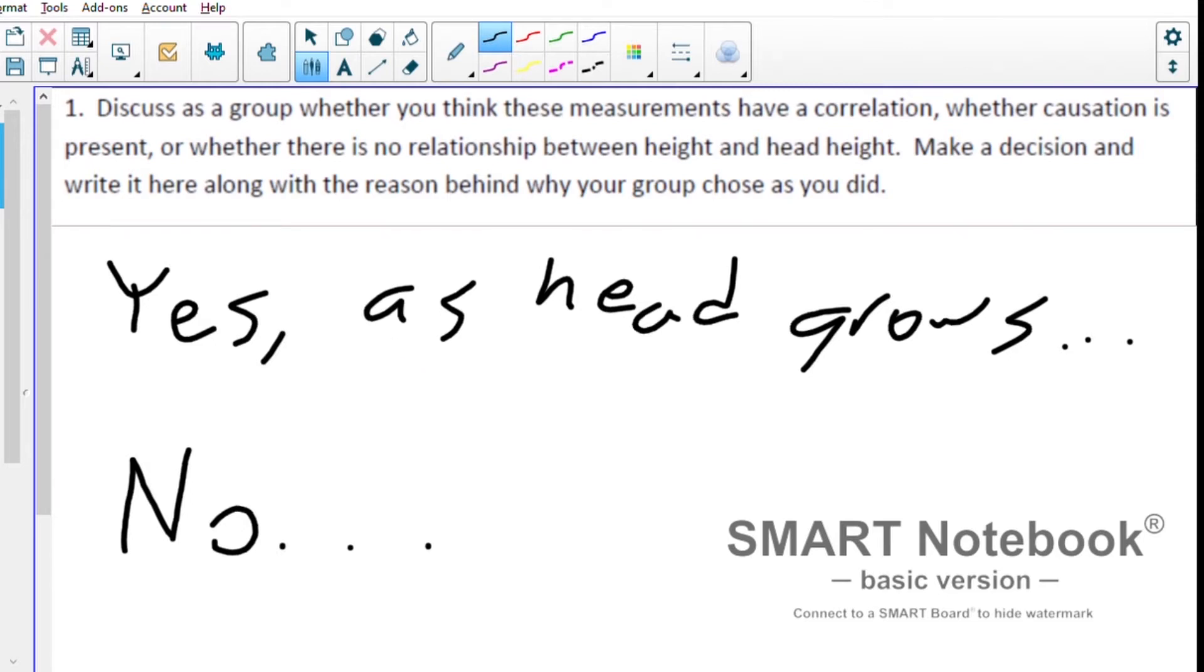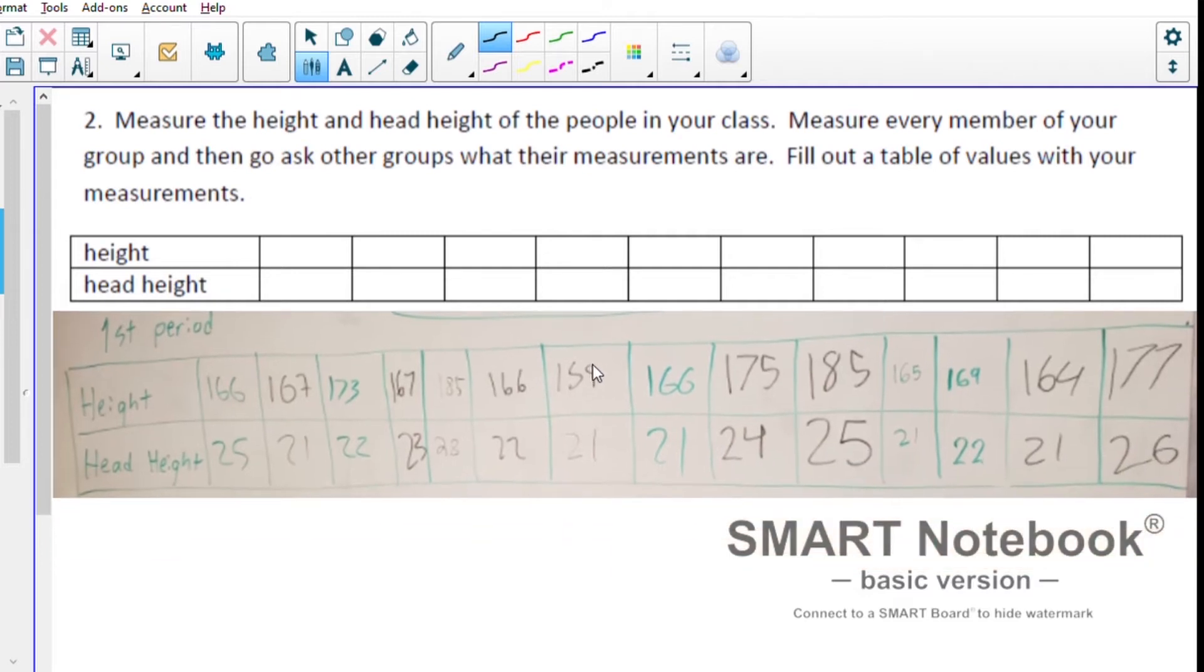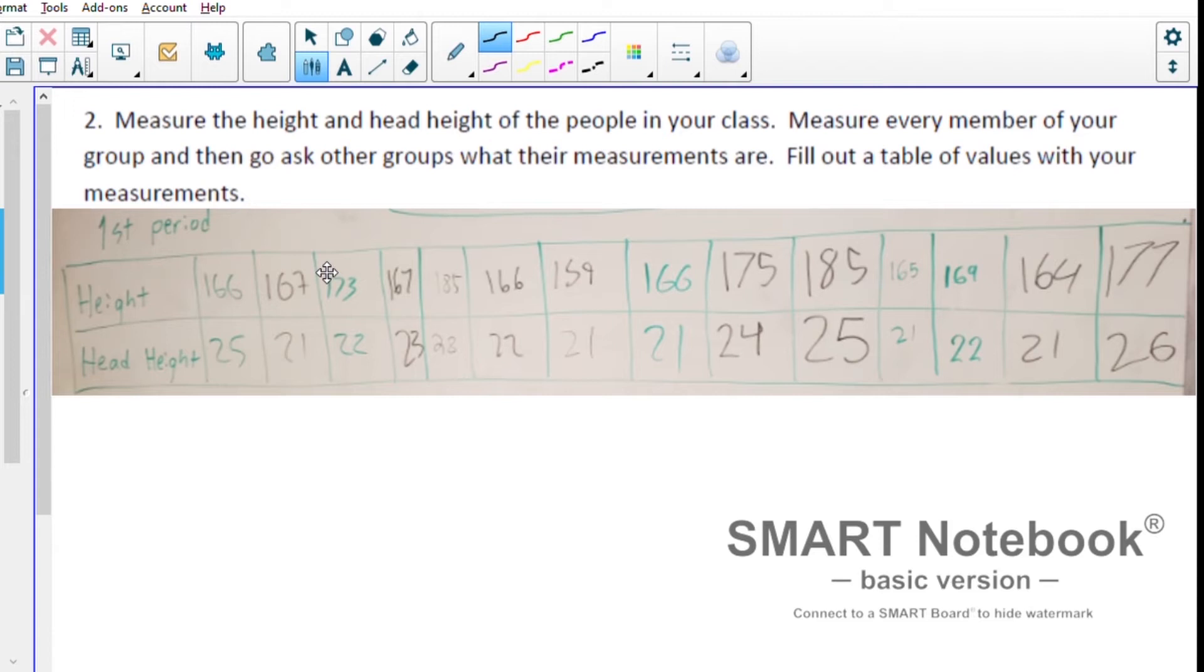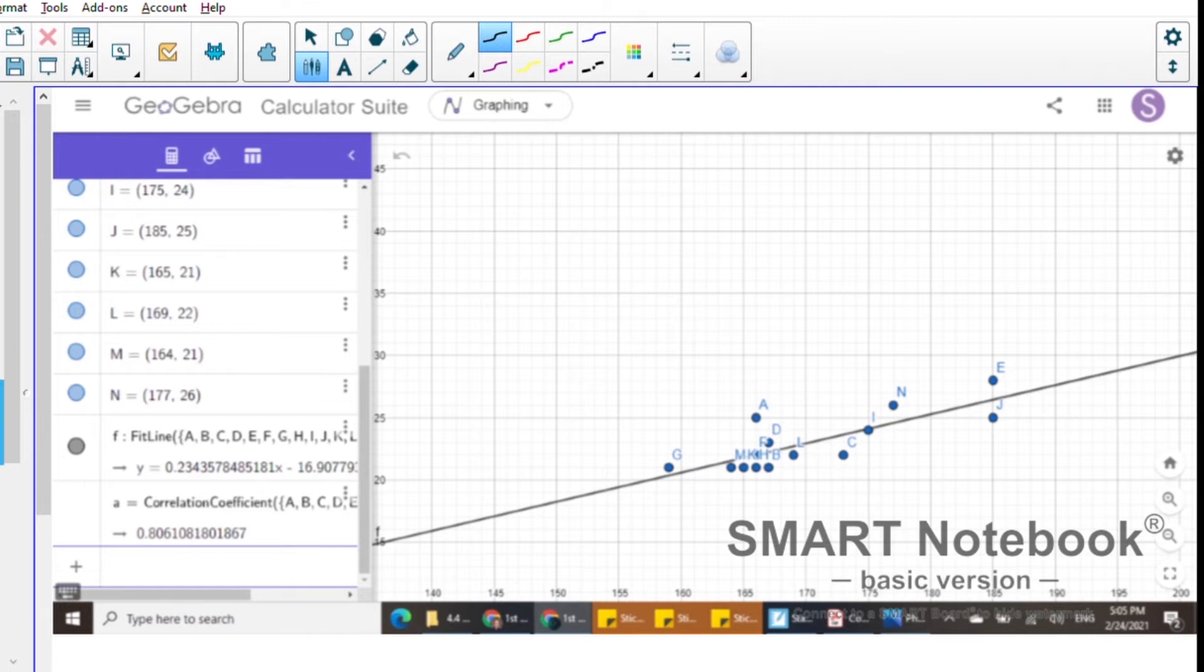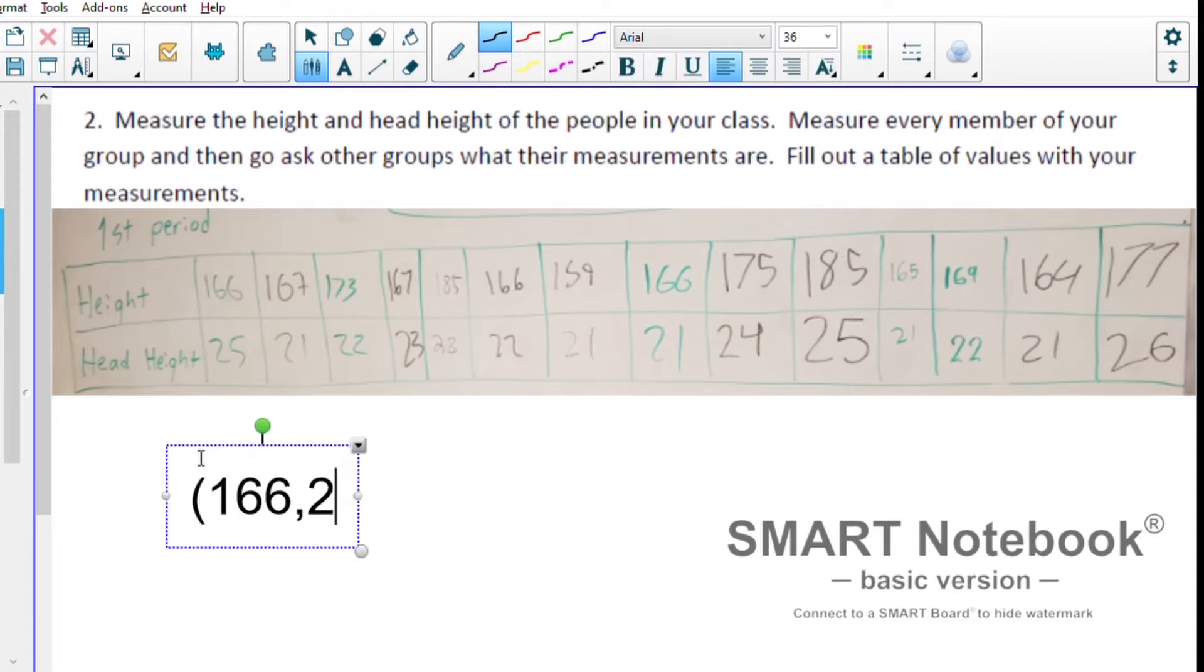That brings us to question number two - you are to create a scatter plot of the data for our measurements in class. We took these measurements, so you can write those on your table of values. Then we're going to go to GeoGebra and plug those in. Each one of these data points is going to be an ordered pair, like 166 and 25, so you would write in GeoGebra as 166 comma 25 and close the parentheses.